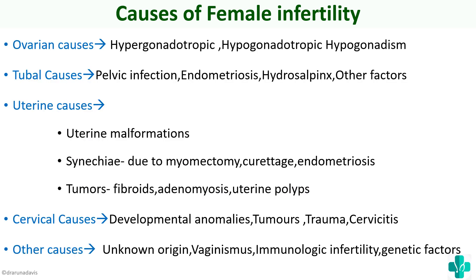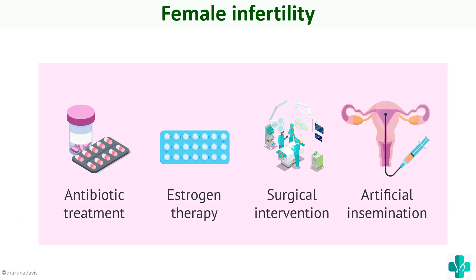To summarize the different causes of female infertility: ovarian causes include hypergonadotropic and hypogonadotropic hypogonadism; tubal causes include pelvic adhesions, endometriosis, and hydrosalpinx; uterine causes include malformations, synechiae from myomectomy or curettage, and tumors like fibroids, adenomyosis, and polyps; cervical causes include developmental anomalies, tumors, trauma, and cervicitis. For investigations: tests for ovulation address ovarian causes, hysterosalpingography addresses tubal causes, and laparoscopy or hysteroscopy addresses uterine and cervical causes.